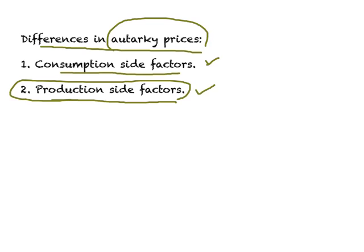Since we are looking at the production side, I had introduced you to the concept of the PPC. When we look at the explanation of foreign trade through diagrams, we will look initially at the example of a straight-line PPC, or where the PPC reflects constant cost. And then we will move on to a PPC which is concave to the origin, representing the increasing cost principle. So for now, we will focus on the constant cost principle PPC.